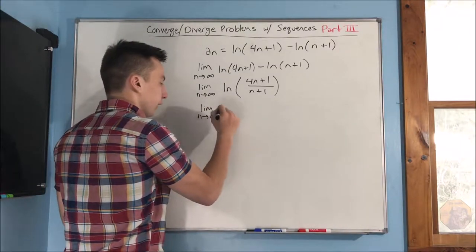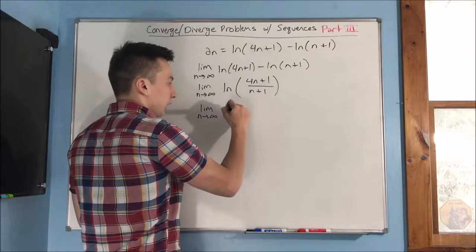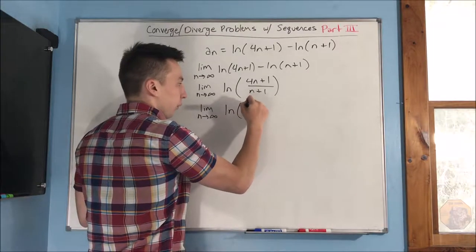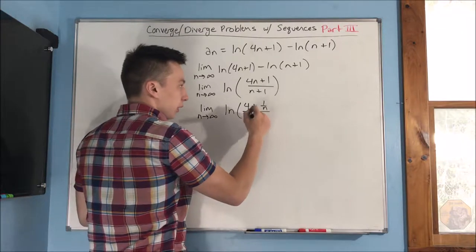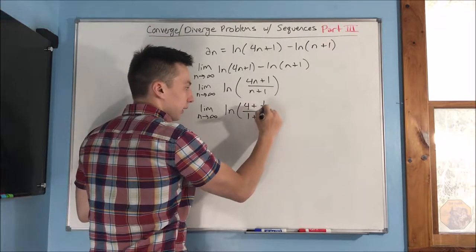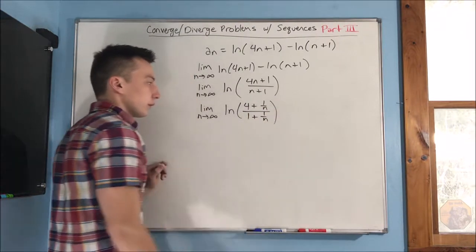If you do that, you get the limit as n approaches infinity of the natural log of 4 plus 1 over n over 1 plus 1 over n.